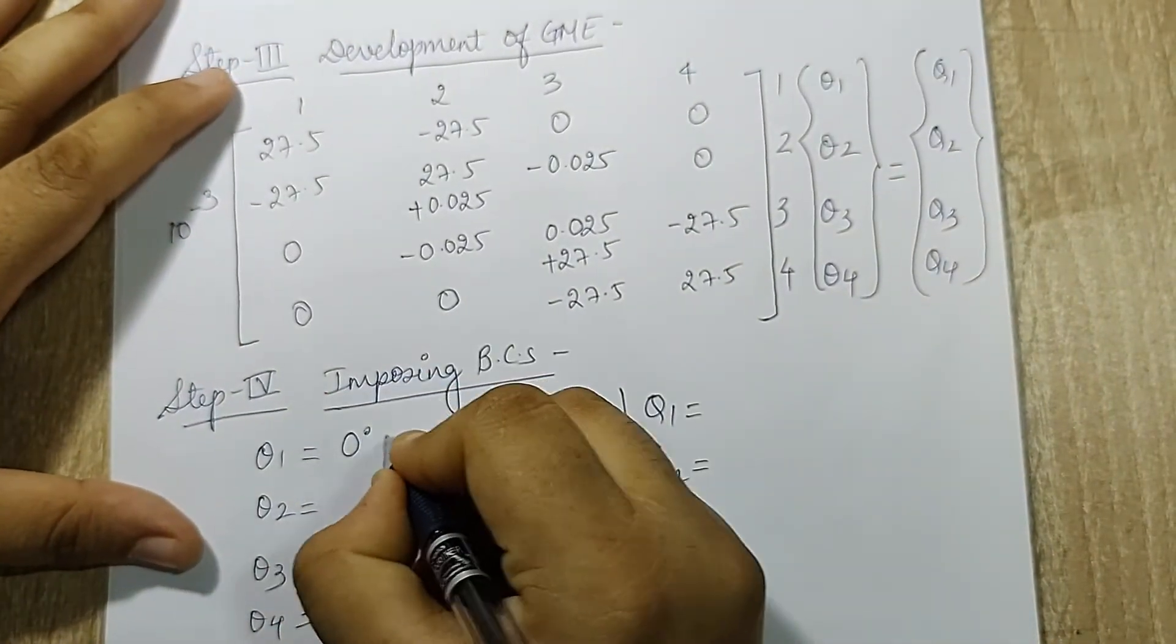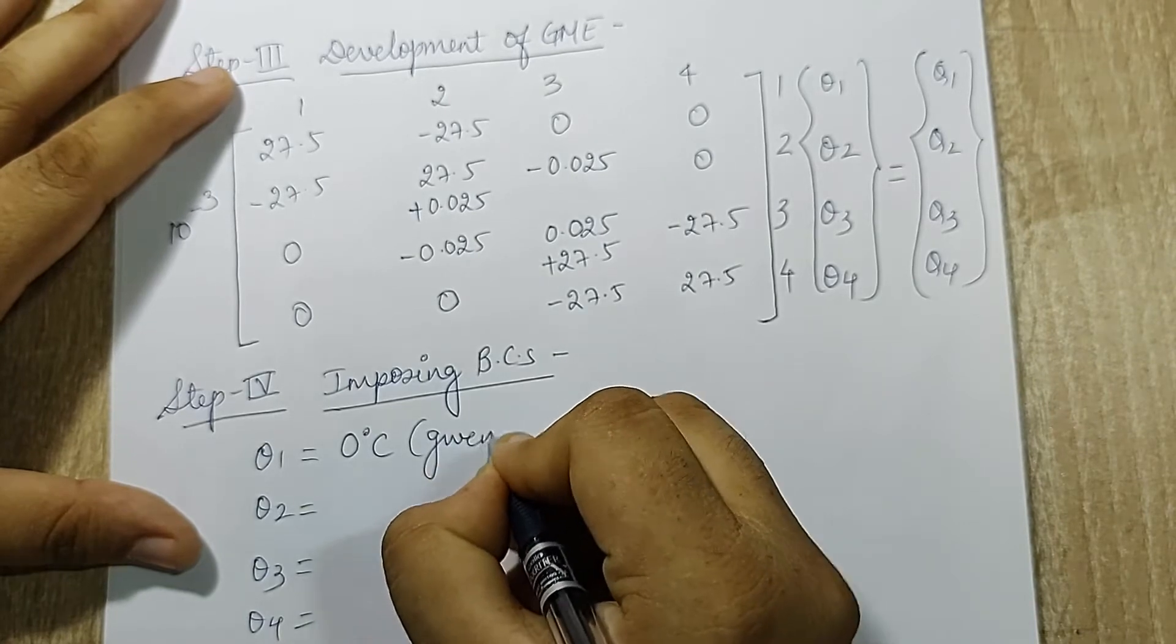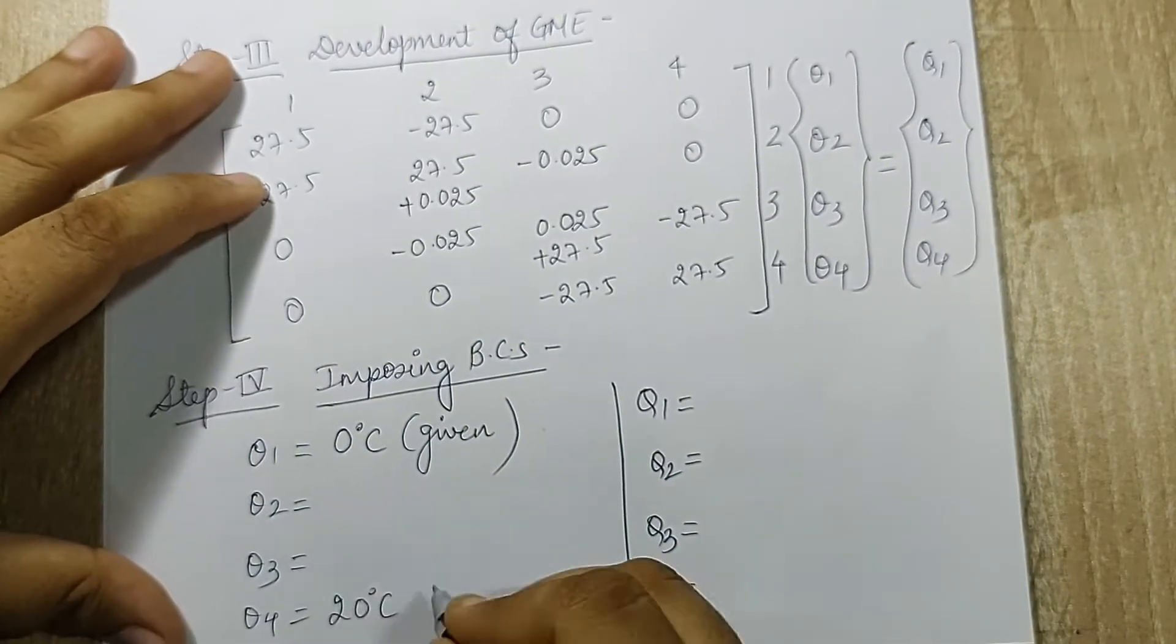These are the two data that is known to me. So I'll write here theta_1 is 0 degrees Celsius given, and theta_4 is 20 degrees Celsius given.